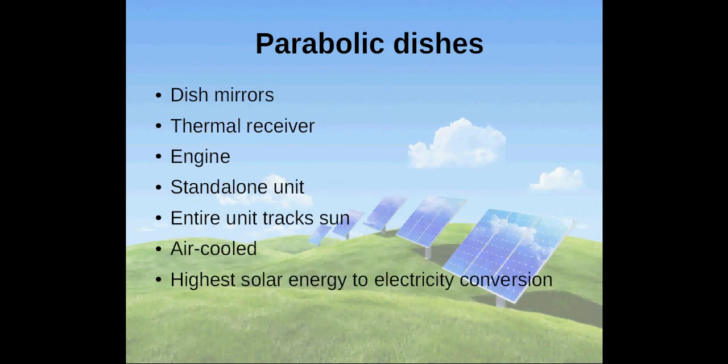Parabolic dish plants use dish mirrors to concentrate sunlight and focus it to a thermal receiver. Unlike parabolic troughs, parabolic dishes are standalone units which are composed of a collector, thermal receiver, and an engine. The entire unit tracks the sun throughout the day.